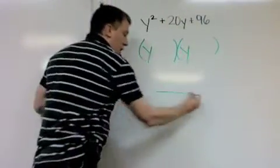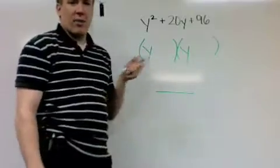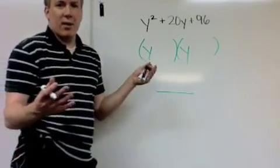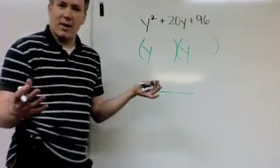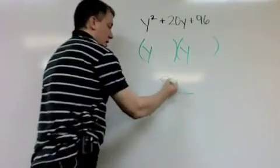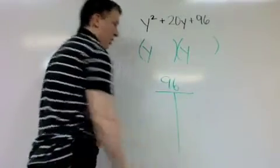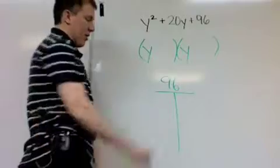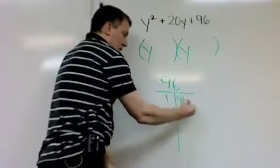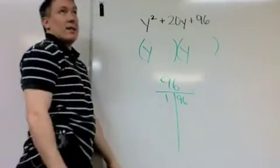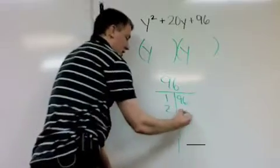So one way of doing that, not everyone's going to be like, oh, I know exactly what numbers multiply to 96 and add to 20. So what I would suggest is write a list of numbers that multiply to 96. Start with the simplest, 1 and 96. Does that add to 20? No. Moving on. 2, 48.